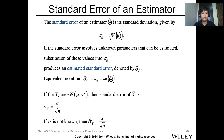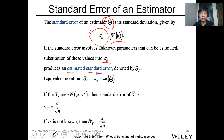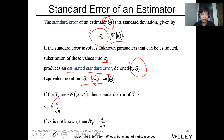The standard error of an estimator theta-hat is its standard deviation. You just need to get the standard deviation of the variance of your theta-hat. If the standard error involves a known parameter that can be estimated, we can use the estimated standard error of the sample, which is just the standard deviation over square root of n.